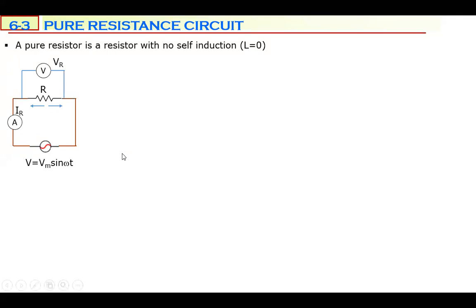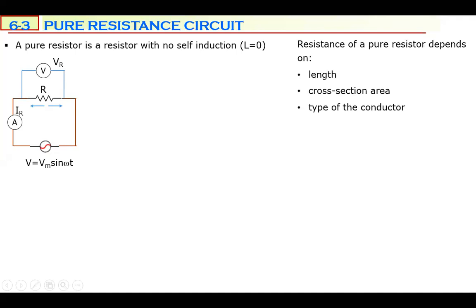This is the symbol of a resistor connected to an AC generator. We attach a voltmeter across this resistor to measure the potential difference VR, and of course we need an ammeter to measure the electric current IR through this resistor.